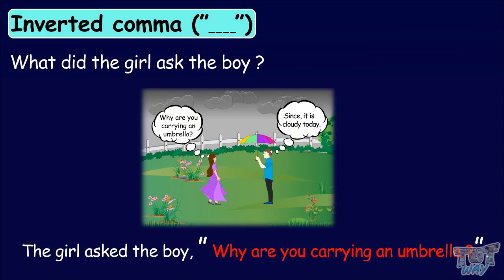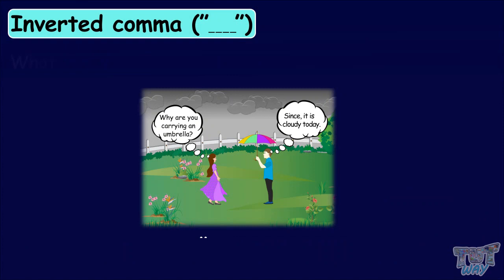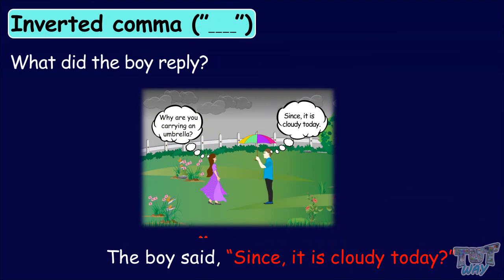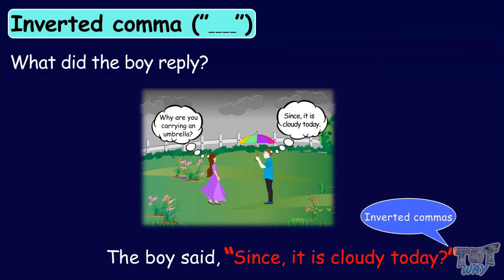What did the boy reply? The boy said, 'Since it is cloudy today.' Again, the words written in red are the exact words of the boy, so we have written them in inverted commas. So, kids, we use inverted commas whenever we have to write the exact words of the speaker.